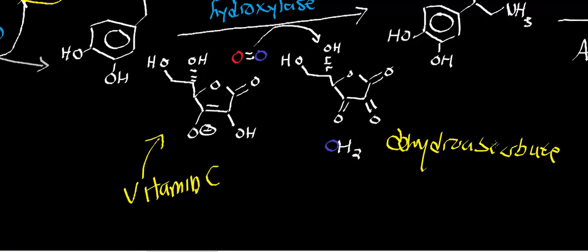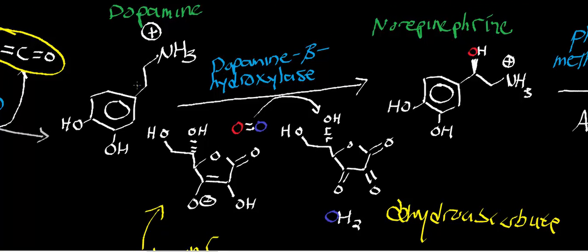Ascorbate is going to be oxidized into dehydroascorbate. This is all part of the mechanism of the enzyme. In the process, you lose water, and you hydroxylate one of the positions on dopamine — specifically the beta-carbon right here. That's why this enzyme is called dopamine beta-hydroxylase. The carbon that the amine is on was the alpha-carbon; the carbon para to this hydroxyl group and meta to the other one is the beta position.